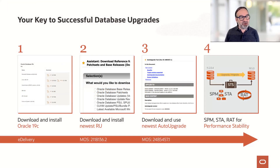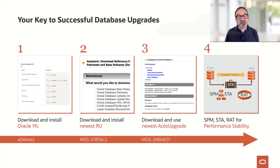Successful database upgrade, very straightforward. You grab 19c software — you always get 19.3.0. Then you add the newest release update, 19.10. If you have OJVM, also the newest OJVM PSU. And then you download the newest AutoUpgrade, and we will show you later why you need to download the newest. So this is the upgrade, the install part, the patching part.